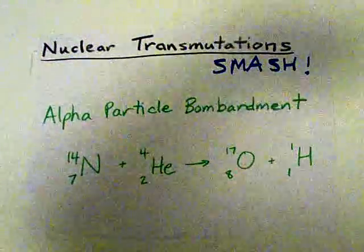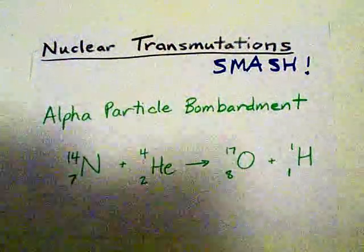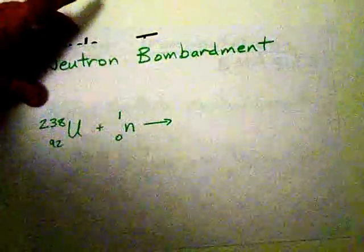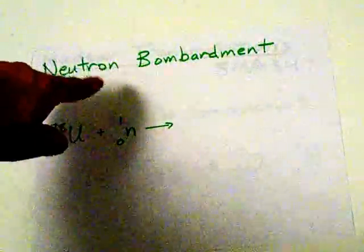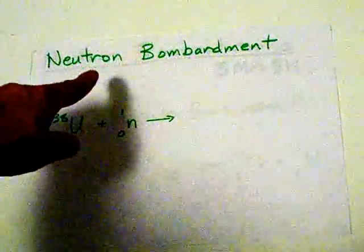Alpha particle bombardment, crazy. Second kind, neutron bombardment, and as far as I know, this is that crazy stuff they're doing in that underground tunnel in Europe.